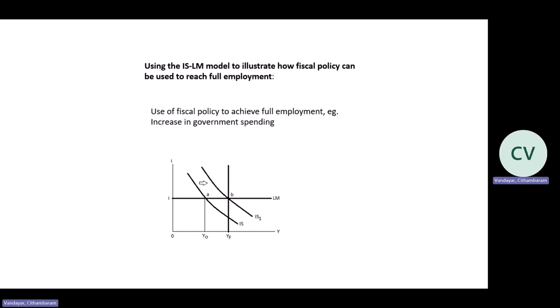The policy instrument for fiscal policy is the budget, and the policy variables used to implement the budget are government spending and taxes. The question is: how do we use government spending to move the economy towards full employment? An expansionary fiscal policy will suggest an increase in government spending, or a decrease in taxes. Let's look firstly at an increase in government spending.